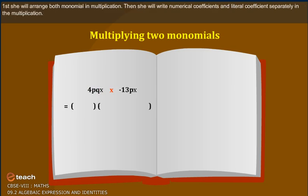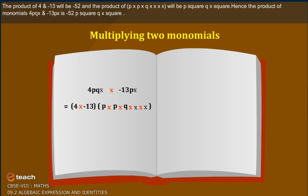First, she will arrange both monomials in multiplication. Then she will write numerical coefficients and literal coefficients separately. The product of 4 and minus 13 will be minus 52. And the product of p into q into p into x into x will be p squared qx squared.